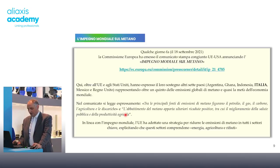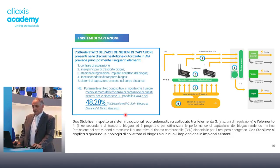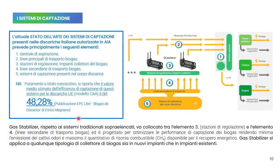Dobbiamo muoverci in questa direzione anche perché l'efficienza di captazione nei vari siti di smaltimento rifiuti è tendenzialmente scarsa. Un dato molto chiaro è che abbiamo un'efficienza del solo 48% nella captazione del biogas: questo vuol dire che se una discarica produce 100, riesco a stento a recuperare il 50% del biogas prodotto e tutto il resto viene disperso in atmosfera in quantità ingenti.